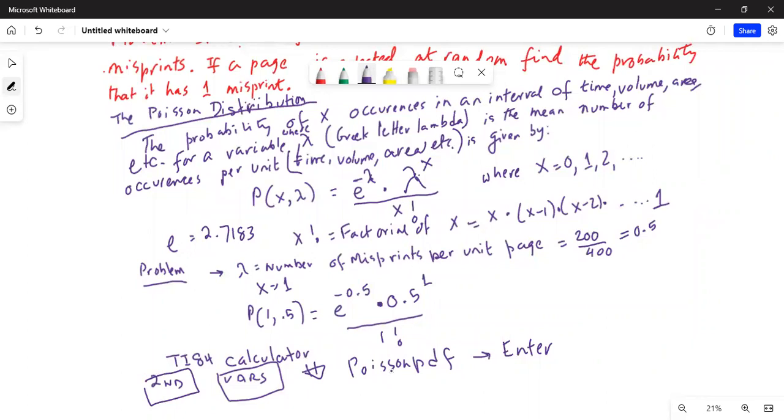Now the screen will open for POISO PDF. My lambda value is 0.5. Type 0.5. My x value is 1. Type in 1. Then you go to paste. Bring your cursor and paste. And hit enter. And enter twice. Whenever you are on paste, you have to hit enter twice. And the answer is 0.30326, equal to 0.3033.